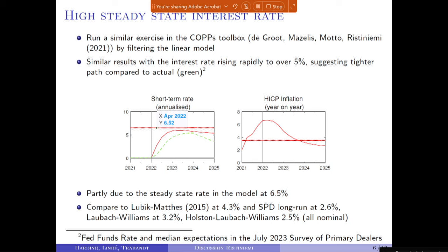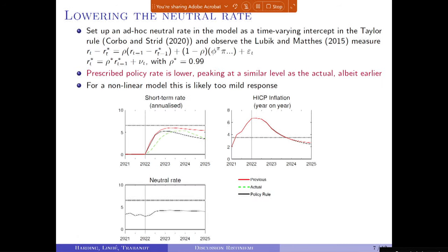This 6.5% steady state interest rate can be compared to other measures: the conservative estimate by Lubik and Matthes at 4.3%, the survey of primary dealers at 2.6%, consistent with Holston, Laubach, and Williams at 2.5%, and Laubach and Williams at 3.2%. The 6.5% even compared to the conservative estimate of Lubik and Matthes seemed quite high. So I set up an ad hoc neutral rate in the model as a time-varying intercept in the Taylor rule — I set R-star as an AR(1) process with the autoregressive parameter at 0.99, and then observed the neutral rate using the Lubik and Matthes measure.